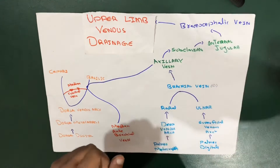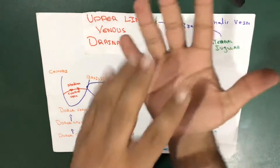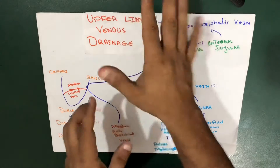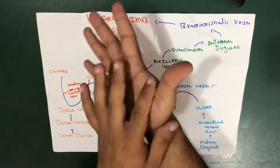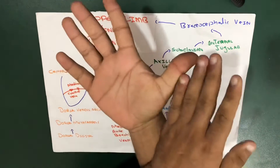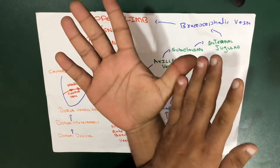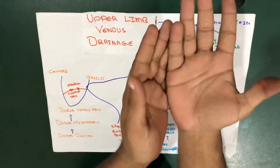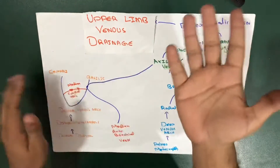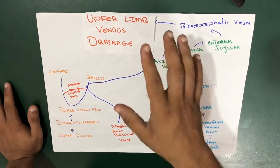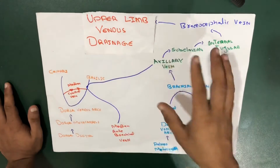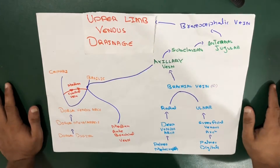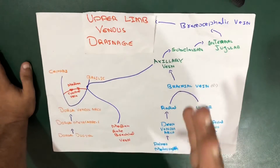Before talking about upper limb venous drainage, we have to make a few things clear. This is the palmar side of the hand and this is the dorsum side of the hand. The thumb side — if you move away from the thumb it's the lateral side, and if you move towards the pinky finger it's the medial side.